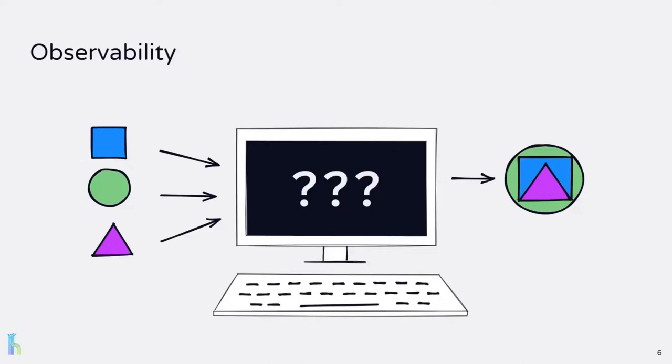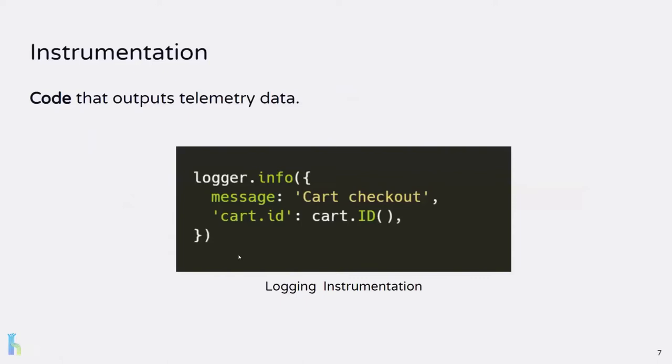In the software industry, we generally speak of three types of telemetry: logs, metrics, and traces. These are often called the three pillars of observability. You may recall that Haifa correlates logs and traces — I'll explain those next in detail. For our application to output telemetry, we need instrumentation. Instrumentation is any code that outputs telemetry — for example, calling a method which outputs a log.